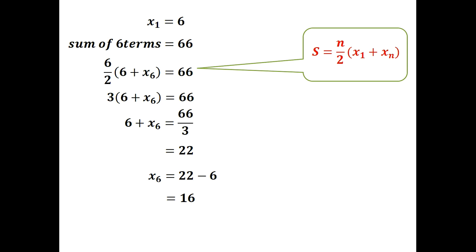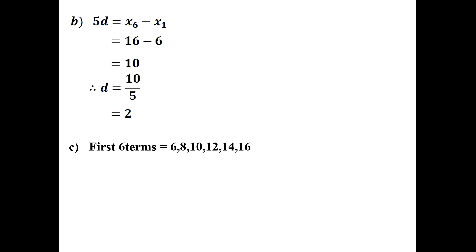To find the common difference: the difference between the 6th term and the first term equals 5 times the common difference. So 5 × common difference = 16 − 6 = 10, giving common difference = 2. The first 6 terms of the sequence are: 6, 8, 10, 12, 14, 16.